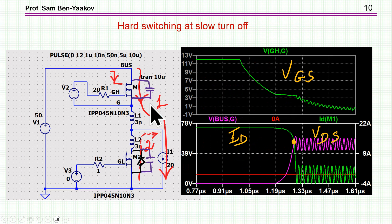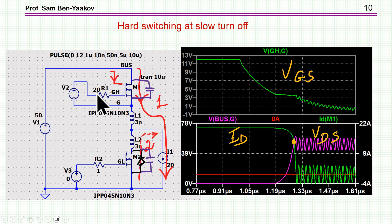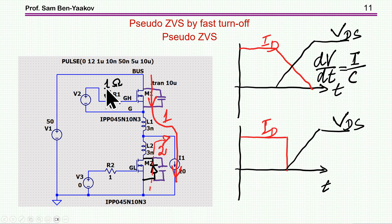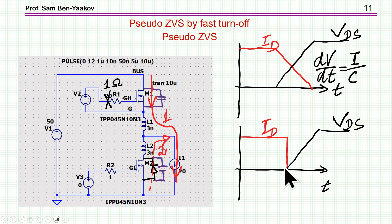Let's have a look now at the case of turn off. The current has already moved from the diode to the inductor — this is representing the inductor — and now I'm about to turn it off. Starting with a slow turn off using 20 ohms: this is VGS, the voltage of the gate. I see the voltage of the drain-to-source going up and the current of course going down, and there is an overlap here. Now I've changed it to one ohm, which makes the turn off very quickly — the current goes down very quickly. The drain goes up rather slowly because there are some capacitances that need to be charged or discharged. Therefore, in the case of turn off, you want to do it very quickly to minimize the overlap between current and voltage.